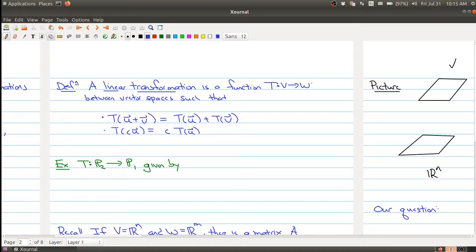Let me give you an example of a linear transformation. Here is an example given by taking a polynomial like this: a0 plus a1*t plus a2*t squared, and what we're going to do is send it to a polynomial of degree one, sending it to this particular polynomial right here.